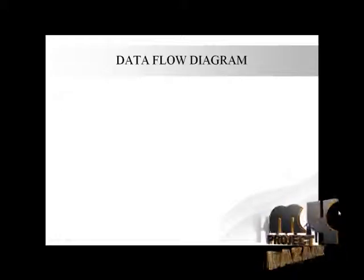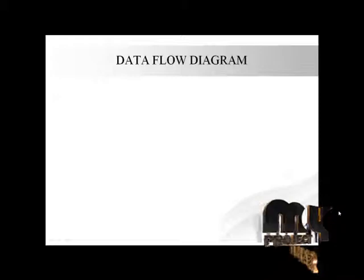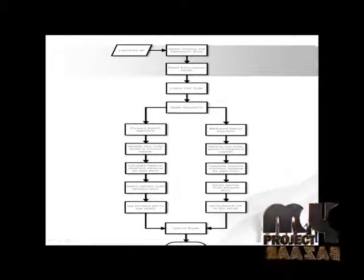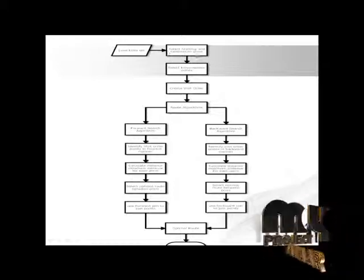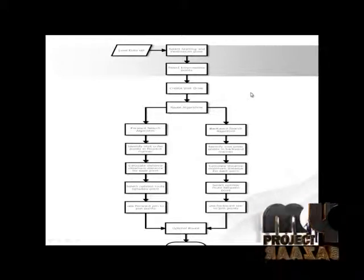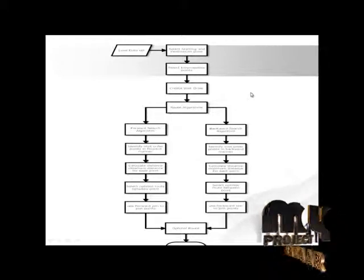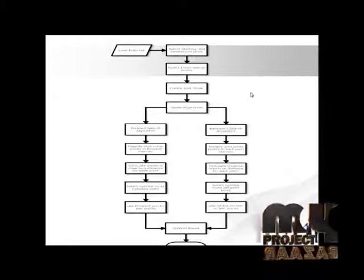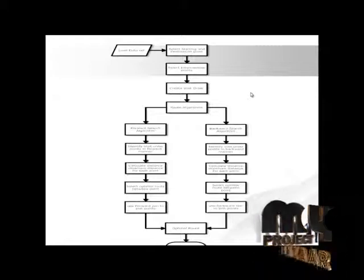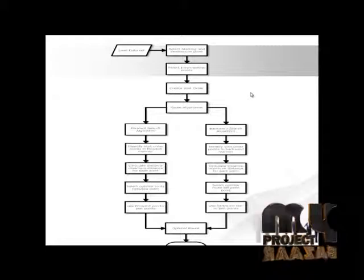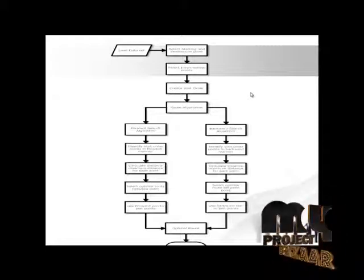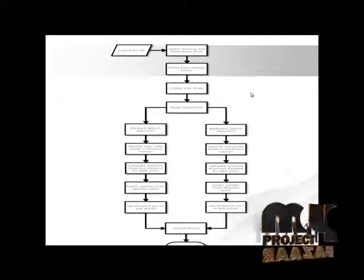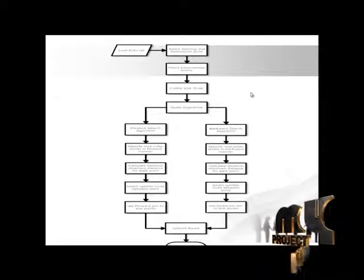Now let's look at our data flow diagram. First, load the dataset, then we need to select the starting and destination points and select intermediate points. After collecting all those points, we need to set the visit order. Once the visit order is created, we need to search using our algorithm — that's the forward search algorithm. Before selecting the forward search algorithm, we need to find the visit order in a forward manner.